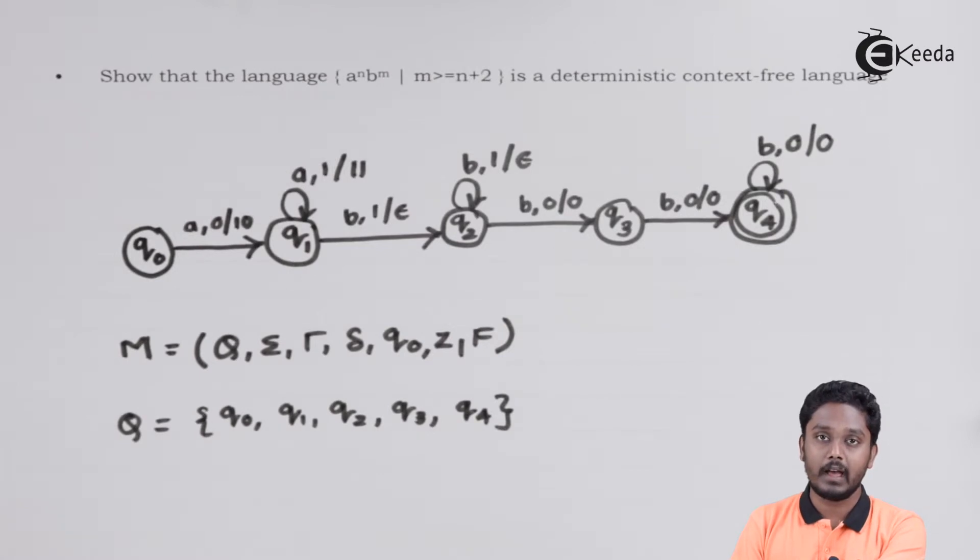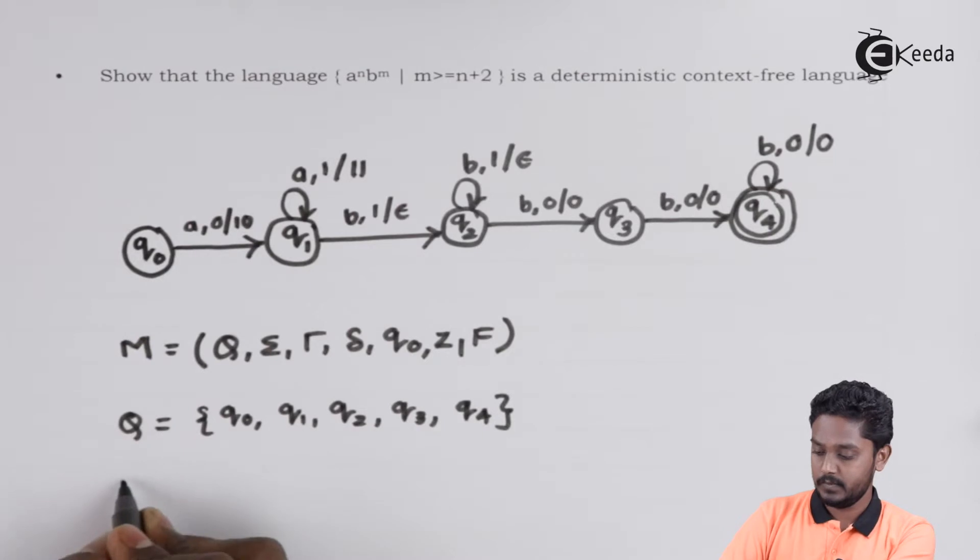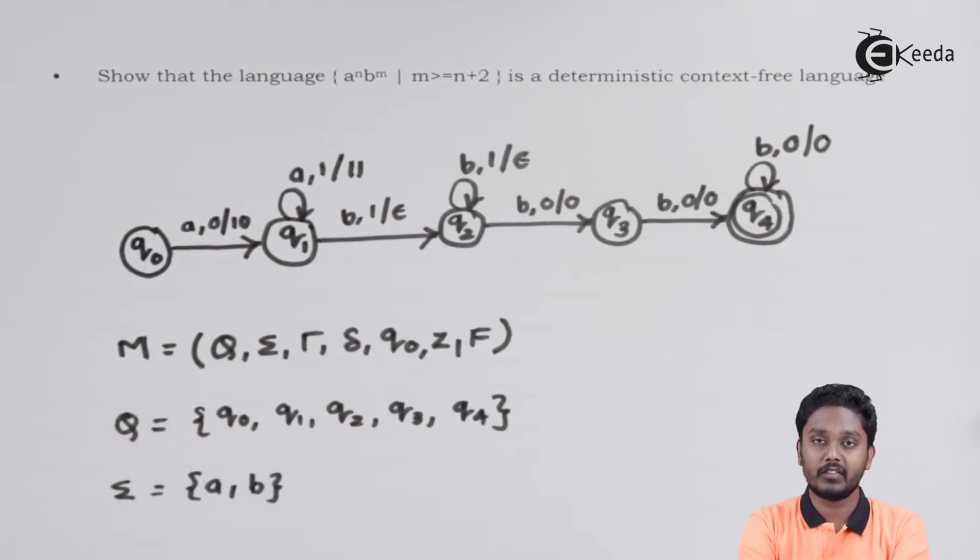We have A and B as alphabet. So sigma will contain A and B. Tau will contain the stack symbol. On the stack, we're using 0 and 1. So tau will contain 0 and 1.